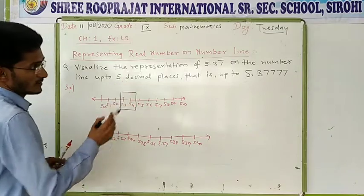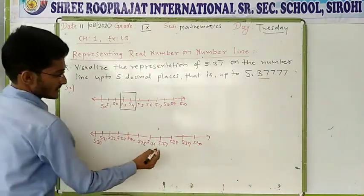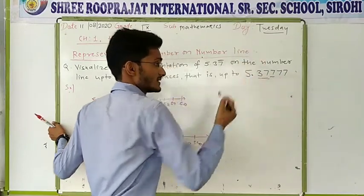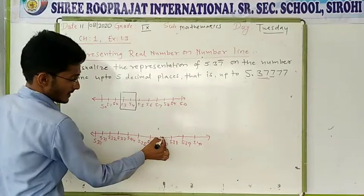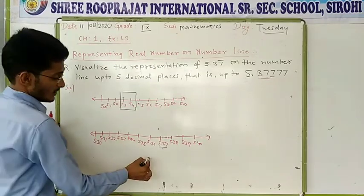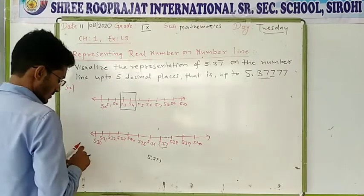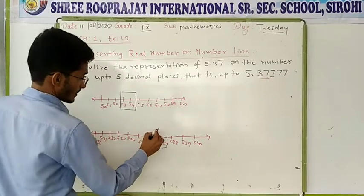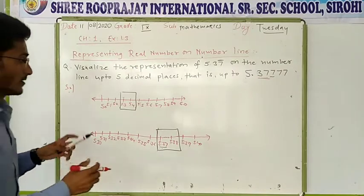After 5.3 we will get 5.37. So now we will talk about where is 5.37. It is at 5.37, but after 5.37 you have to move to the next 7. So first of all we have to complete 5.37 and then again we have to divide that part into 10 equal parts. So after 5.37 you will get 5.371 through 5.38. We will zoom it again and draw the same.